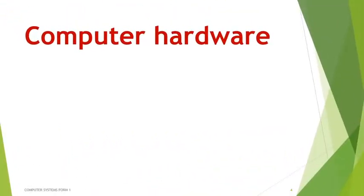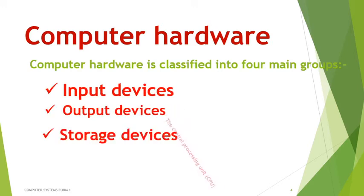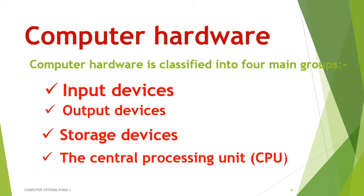We will now look at each component in depth, starting with hardware. Computer hardware consists of the physical parts of a computer, classified into four main groups: input devices, output devices, storage devices, and the central processing unit (CPU).